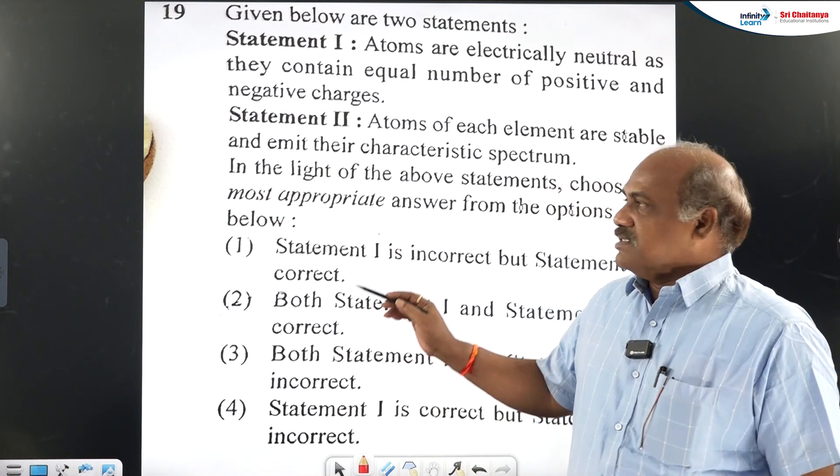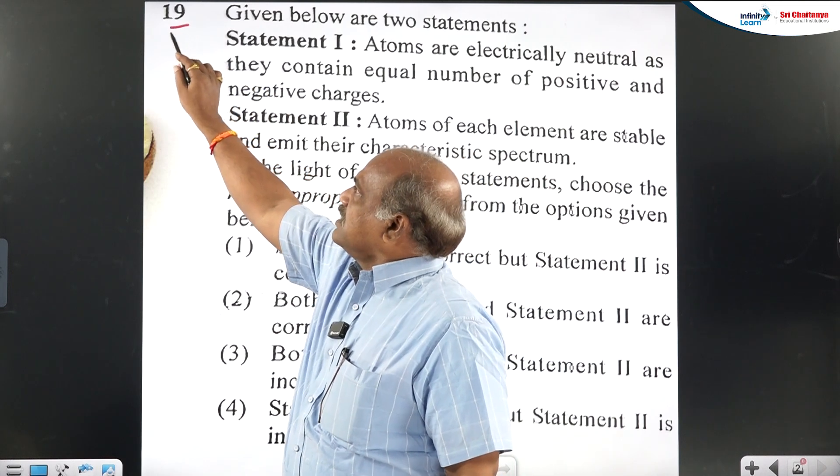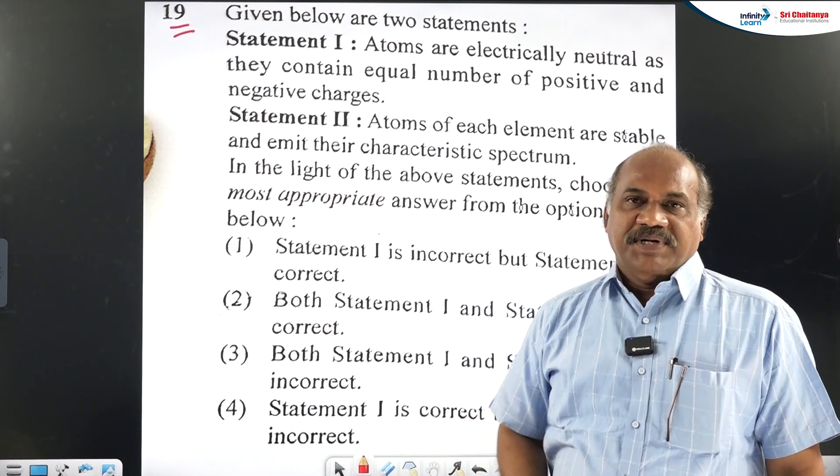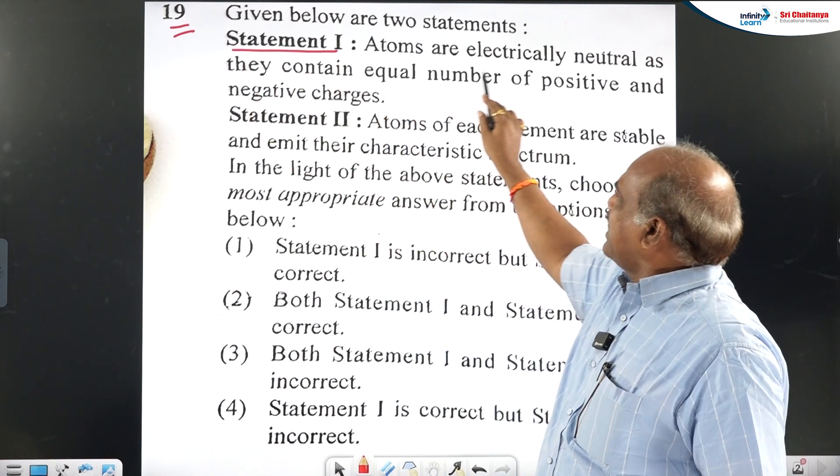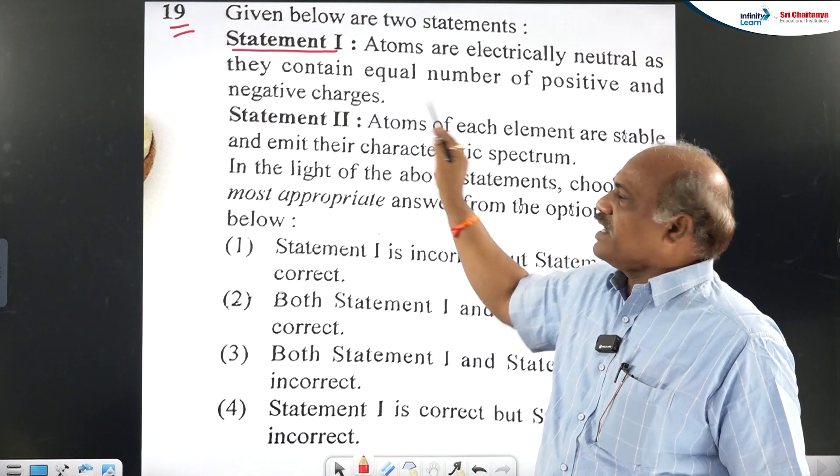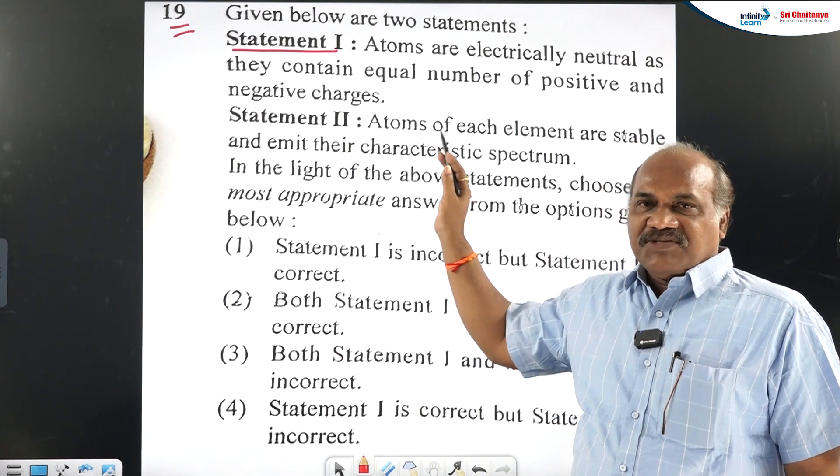And here the question is a theoretical question. This question consists of two statements. Statement 1: Atoms are electrically neutral as they contain equal number of positive and negative charges. That is one statement.